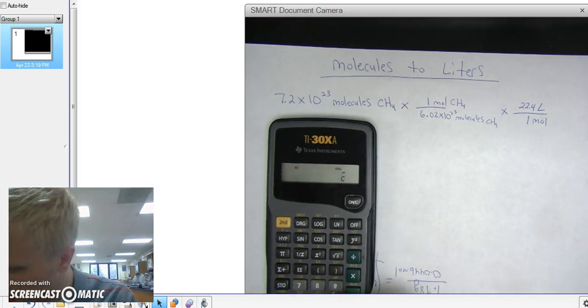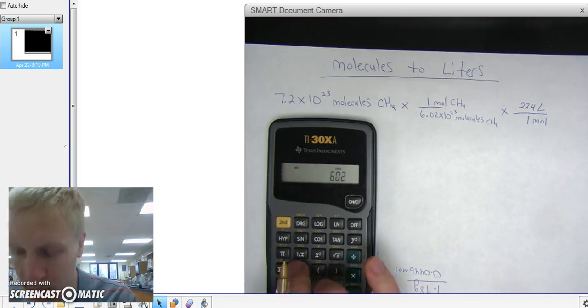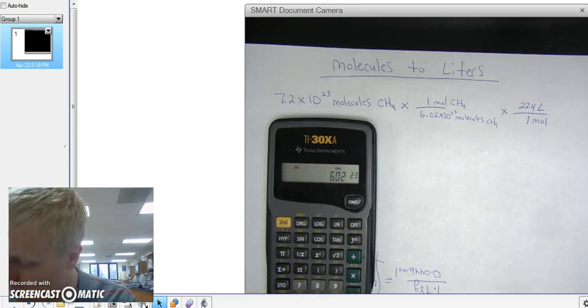Alright, and then I divide it by 6.02 times 10 is represented by the E button, 23. Press the equal sign. Keep on going.